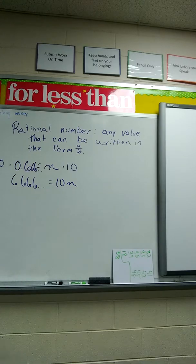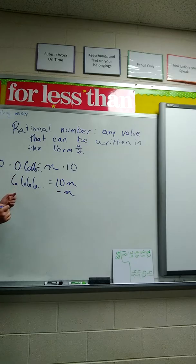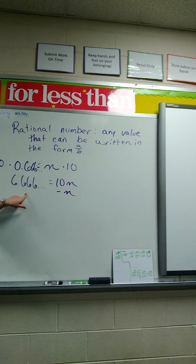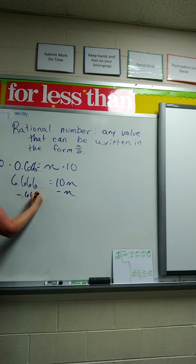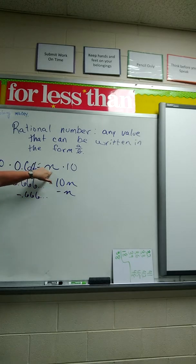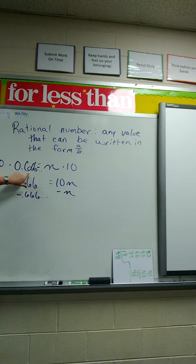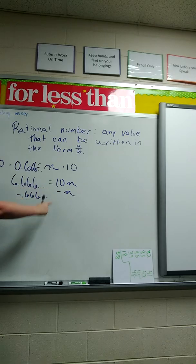We're going to subtract n from both sides. On this side, I'm not going to subtract n as a variable, though. What am I going to subtract n as? I'm going to subtract from n as my decimal. Can I do that? Am I subtracting from the same thing on both sides of my equal sign? Yes, because n is equal to my decimal value. So because n is equal to my decimal value, I can do that. Are we together? Yeah?